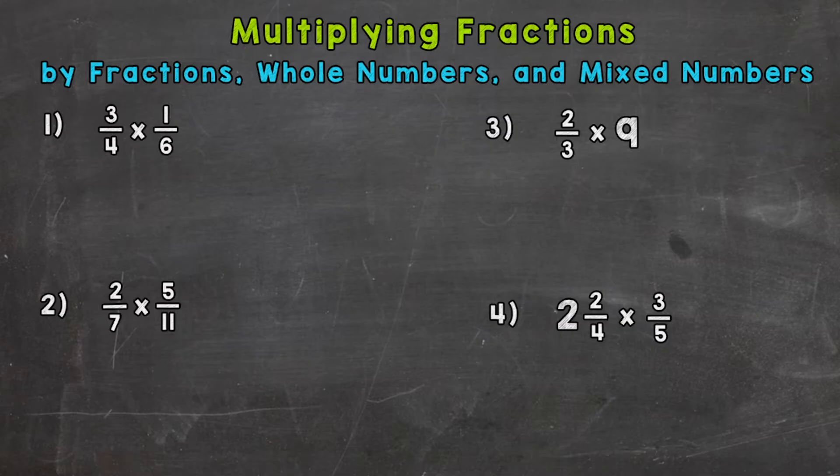So let's jump right into number one here where we have three fourths times one sixth. So a fraction times a fraction. Now when we multiply fractions we need to do numerator times numerator and denominator times denominator. So we multiply straight across. Multiplying fractions is actually simpler than adding or subtracting fractions because we do not need a common denominator.